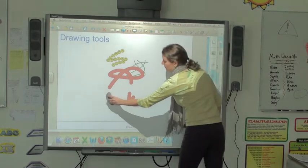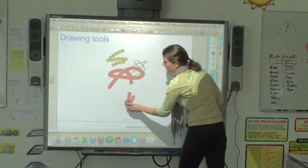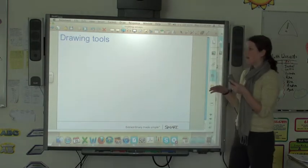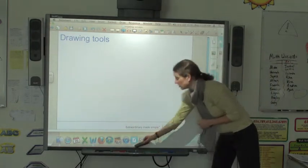So I put my eraser on the board, I make a complete circle - you have to close your circle - then tap in the middle and it erases everything within your circle.